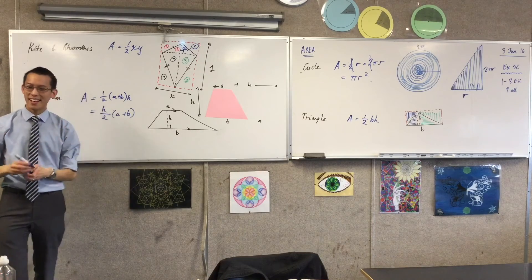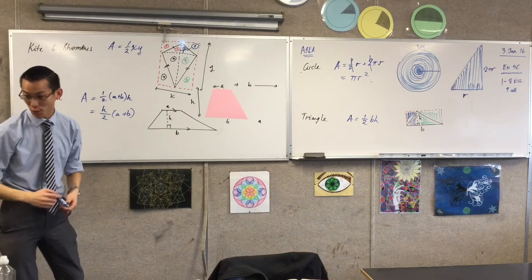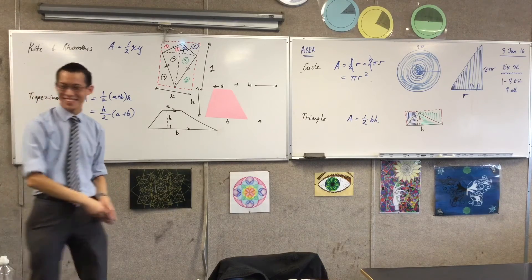So, what if you're not given the radius? There are other ways to work out the area. You get the diameter. Exactly. That's right.